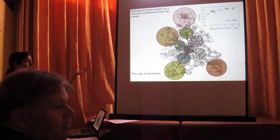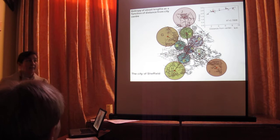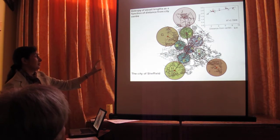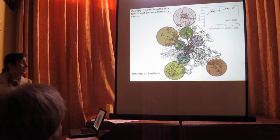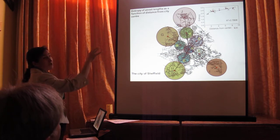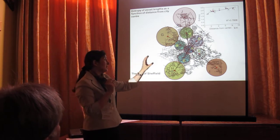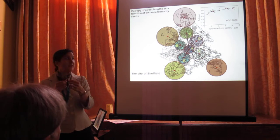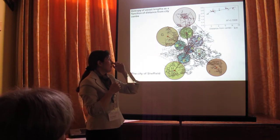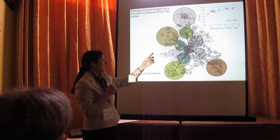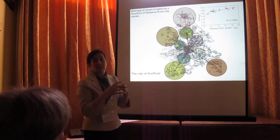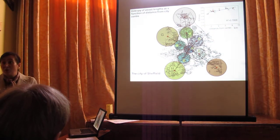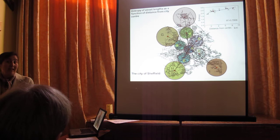So why this regularity, and what does it mean? I look at the entropy of street length in Sheffield, showing entropy as a function of distance from the center to the margin, generally increasing. I chose clusters based on a similar number of streets and found that entropy as a function of distance to the margin generally increases, meaning the spreading of street networks in terms of length is increasing outward.